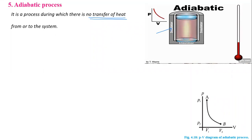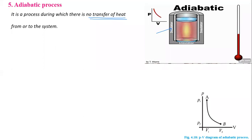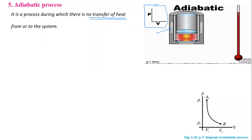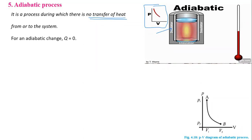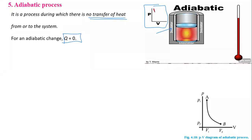In an adiabatic process, as volume increases, pressure decreases, and temperature also changes. For an adiabatic change, Q equals zero — there is no heat transfer. Therefore, the change in internal energy equals minus W.